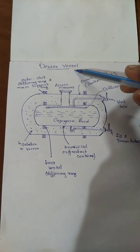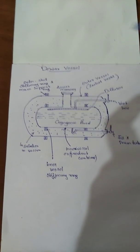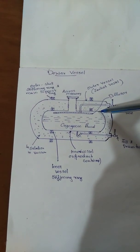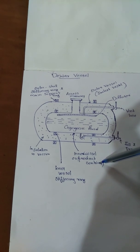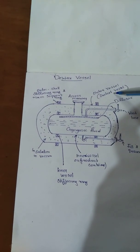The Dewar vessel is used for storage and transportation of cryogenic fluids. It consists of two containers: an inner container called the product container and an outer vessel called the jacket vessel.